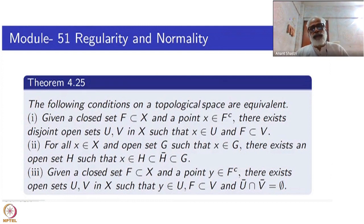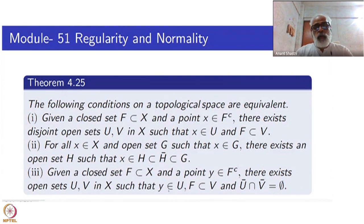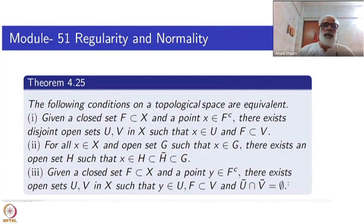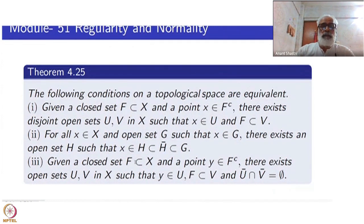The third condition: given a closed set F and a point Y outside it — similar to condition 1 — there exist open sets U and V in X such that Y is in U and F is inside V. This is the same as condition 1, but the last part is stronger: here U-bar intersection V-bar is empty, whereas in condition 1 it was only U intersection V is empty. The third condition is much stronger, but the claim of the theorem is that all three are equivalent.